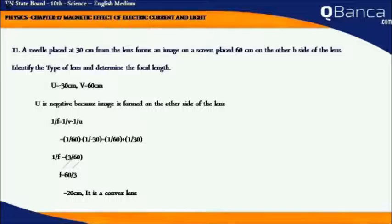Therefore, 1 by F equals, taking the LCM, 3 by 60. F equals 60 by 3. Cancelling the numerator and denominator, F equals 20 cm. It is a convex lens.